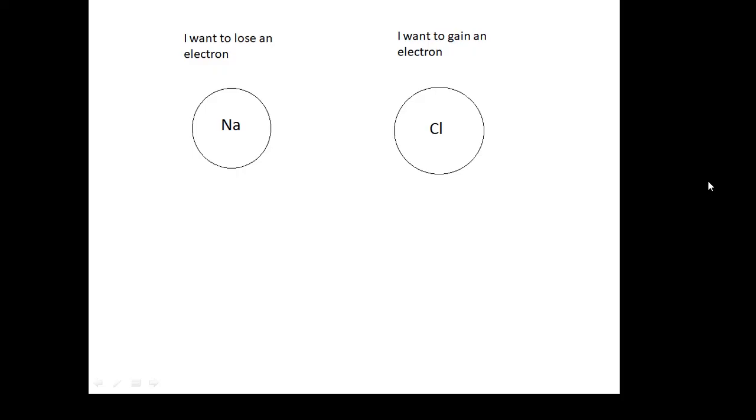It's got one electron in its outer shell. It would much rather have a full outer shell, so it wants to lose an electron. Chlorine wants to gain an electron. It's got seven electrons in its outer shell. If it gained an electron, it would have a full outer shell.